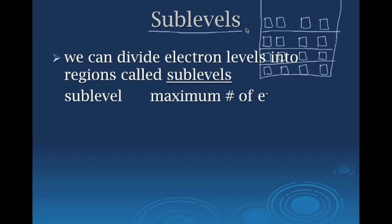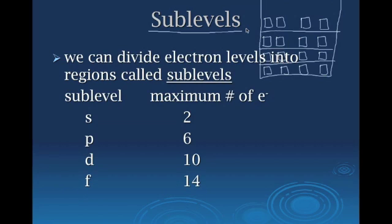The first sub-level you'll encounter is S, which can only hold two electrons — a very small sub-level. The second sub-level is P, which can hold a maximum of six electrons. Then there's D, which can hold up to ten electrons. And F is the biggest sub-level we currently have, holding a maximum of 14 electrons.